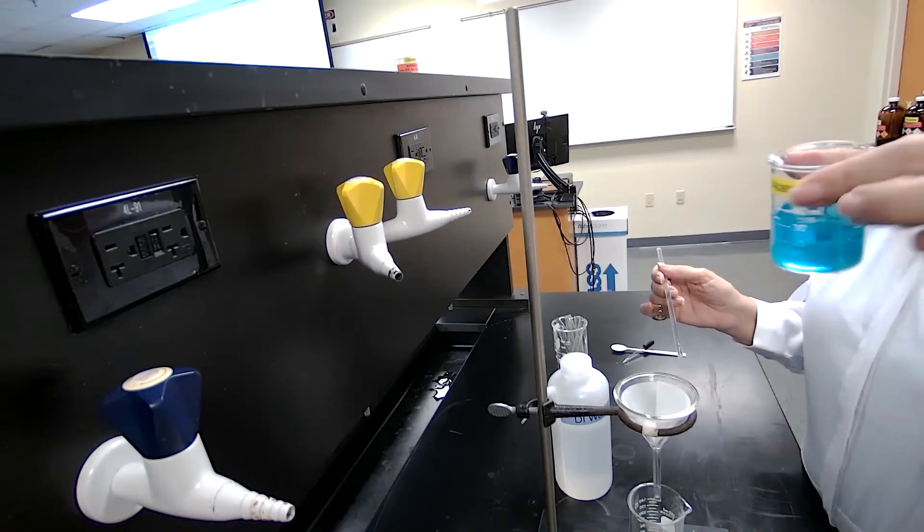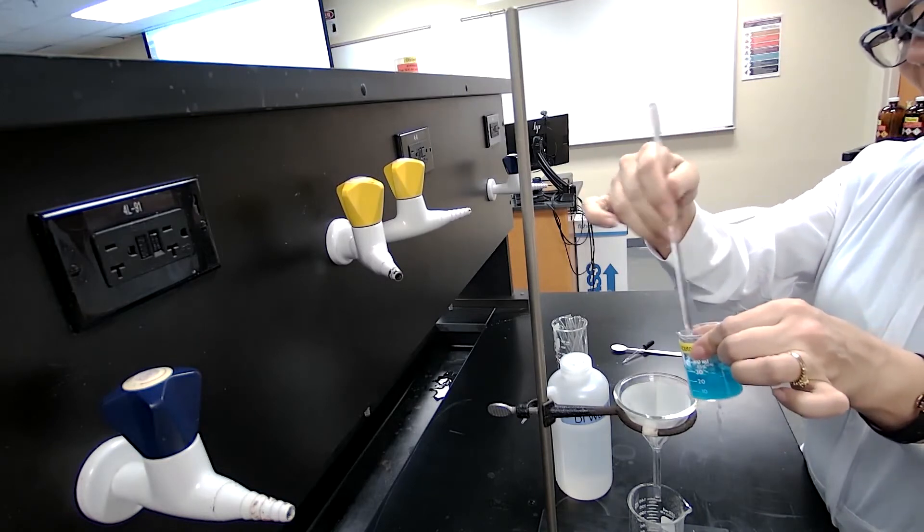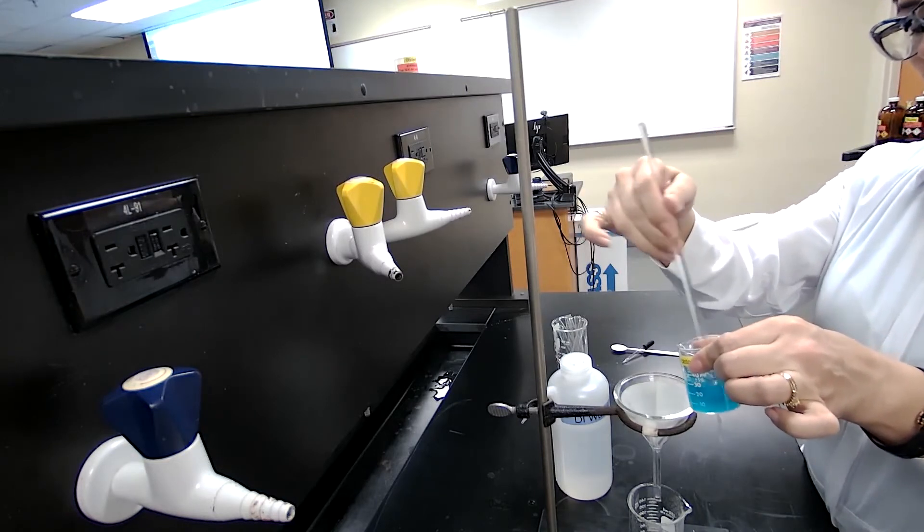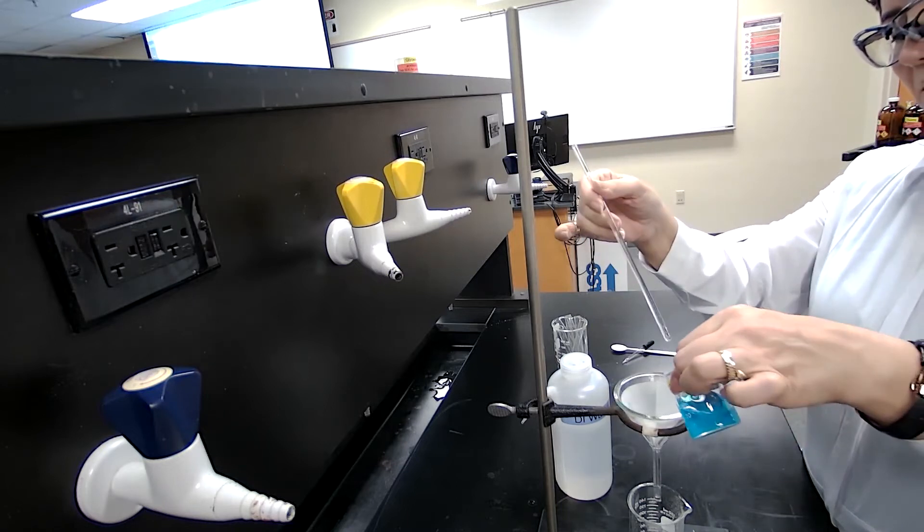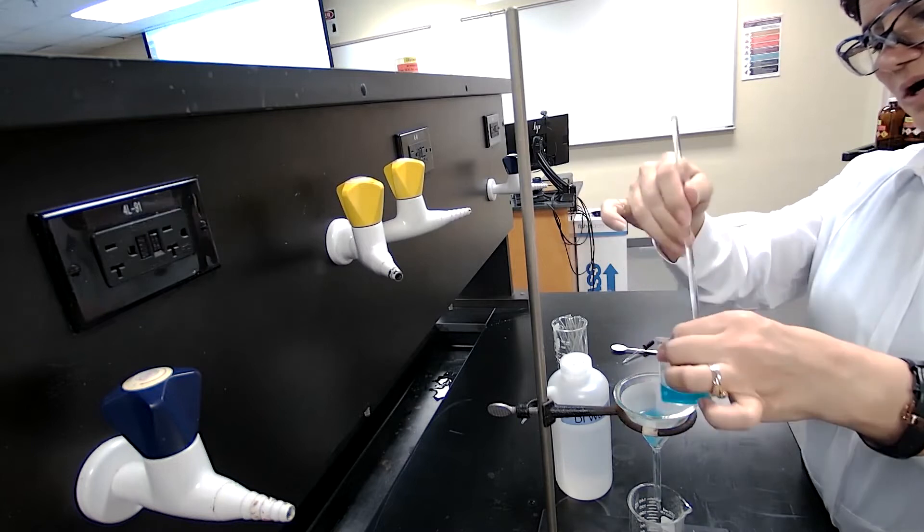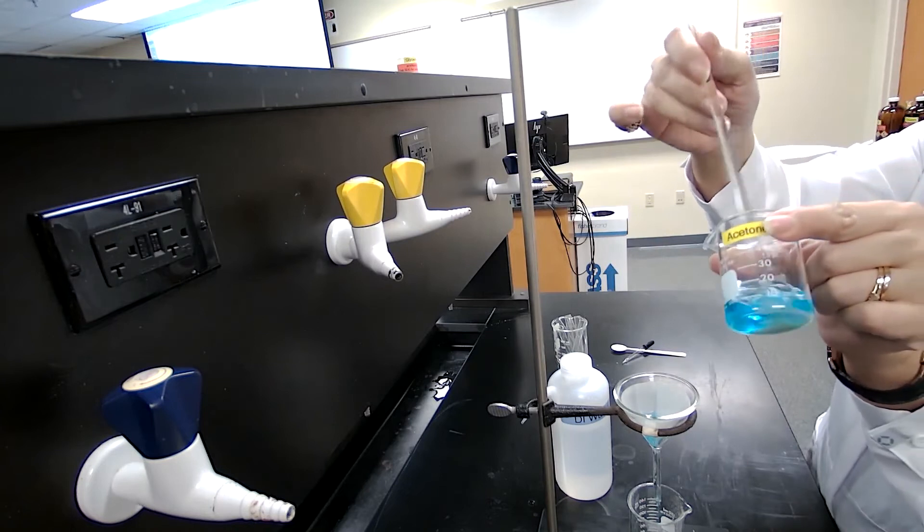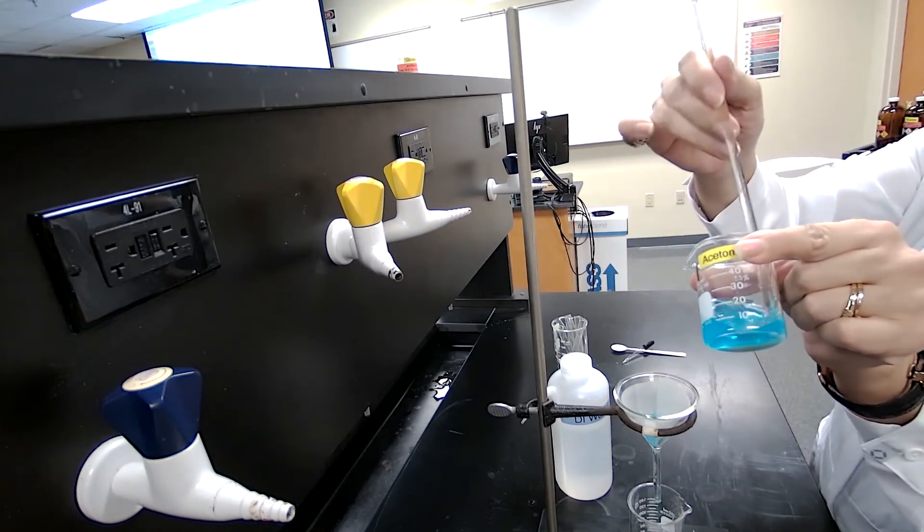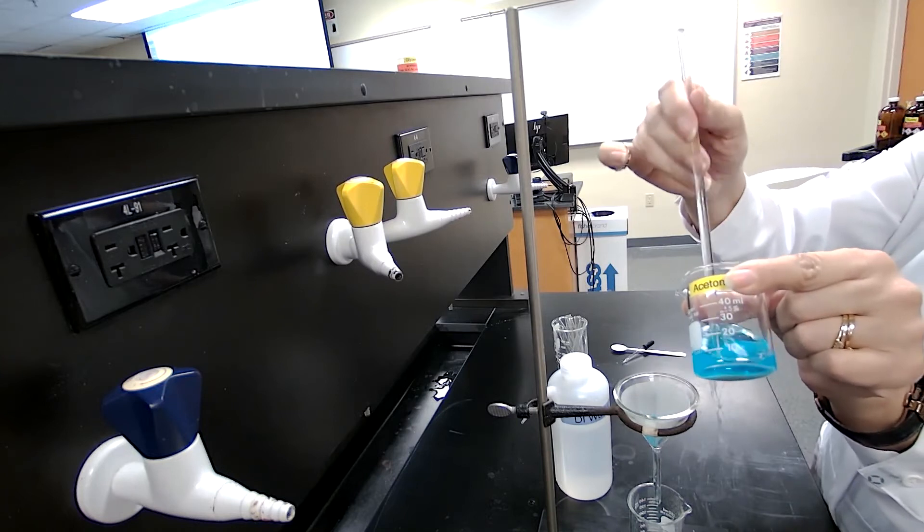So I'm going to pour the mixture through the filter paper. Because I want to transfer both components, I mix it to make sure that everything transfers. Otherwise, the solid piece, especially in this case where we have sand for this part of the experiment - it was sand and copper sulfate - the sand is heavy and it's going to stay in the beaker.